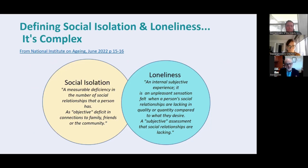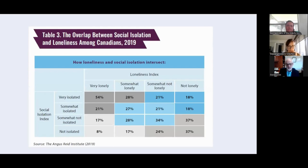We talk about these two concepts as though they're one, but they're not. Social isolation is much more of an objective finding — you can measure it by the actual number of social relationships a person has and how much time they spend with other people. Loneliness is a much more subjective experience; it's an unpleasant sensation felt when a person's social relationships are lacking in quality or quantity compared to what they desire. They do not totally overlap: you can be very isolated but not lonely, and the opposite. It's important to remember that they overlap considerably, but not entirely.